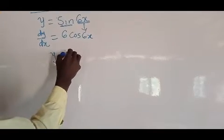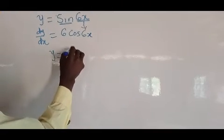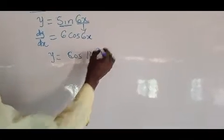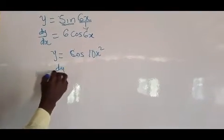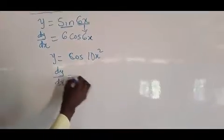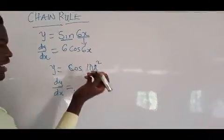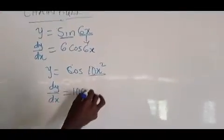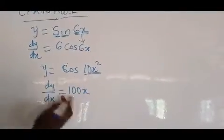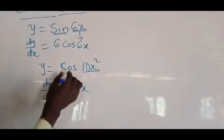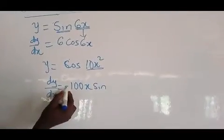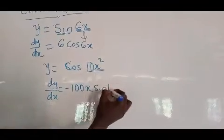Let's use another example: y equals cos(10x²). Now dy/dx, you differentiate 10x², you get 20x. Differentiate cos, you get minus sin. I put the minus at the back, then write your 10x² back.